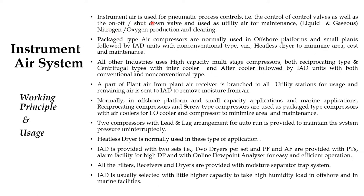Instrument air is normally used for pneumatic purpose control — that is the control of all control valves as well as on-off valves, shut-down valves — and used as utility air for maintenance, liquid and gaseous hydrogen and oxygen production, and cleaning purposes also.